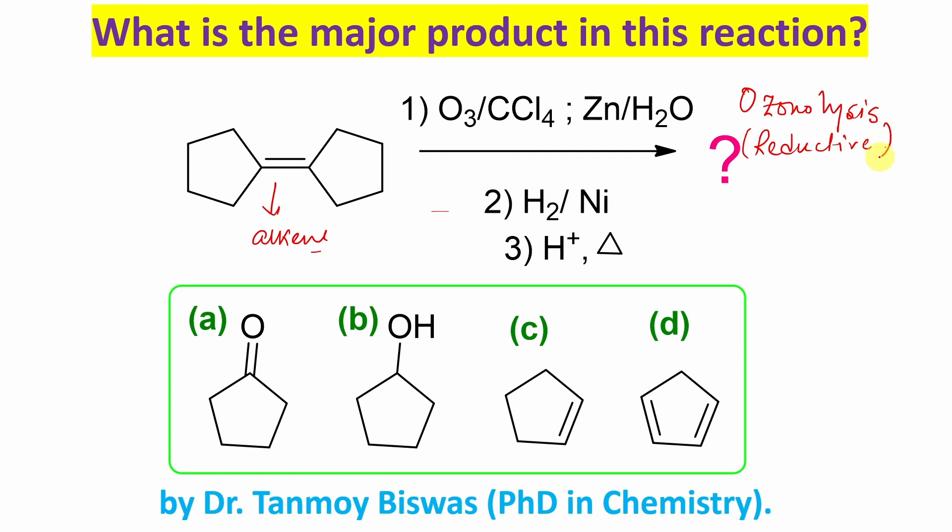In the second step, if you look, there is zinc water. What it does in ozonolysis: hydrogen peroxide is produced as one of the byproducts, so hydrogen peroxide is oxidizing in nature. That oxidizes the produced carbonyl compound to the corresponding carboxylic acid derivative. I mean aldehyde or ketone to carboxylic acid.